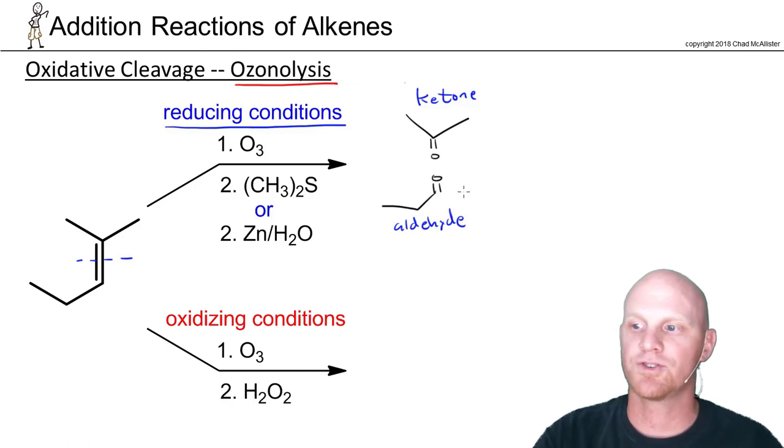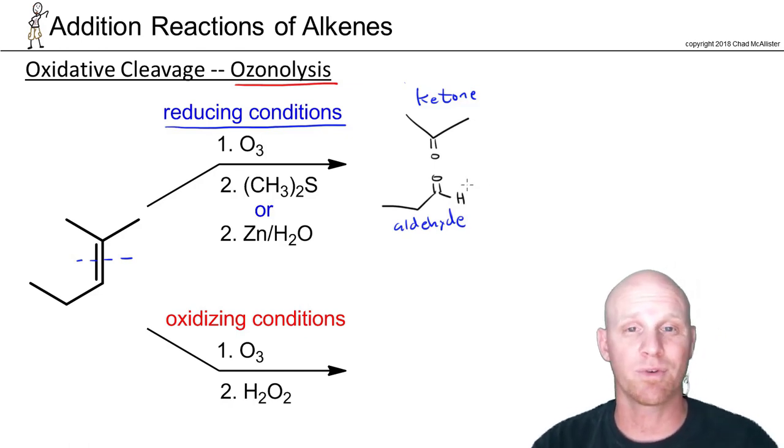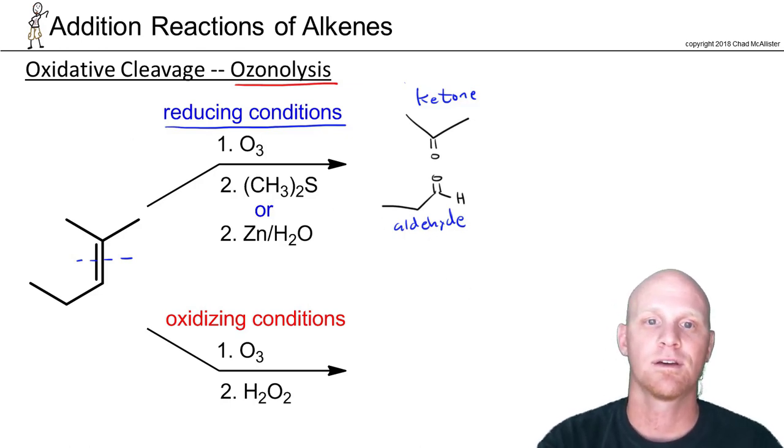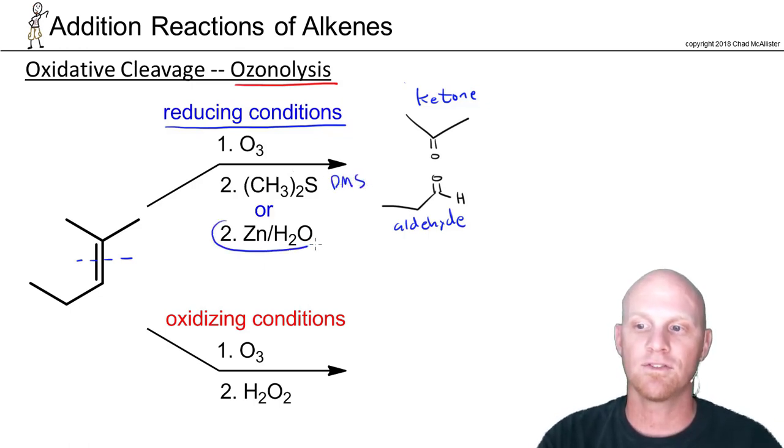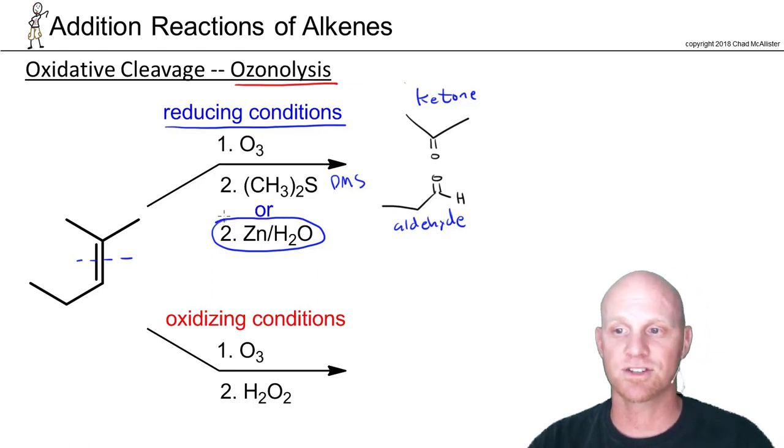And then we've got an aldehyde on bottom. And for that aldehyde, we will often draw in the hydrogen. We don't normally draw in carbon-hydrogen bonds. But for an aldehyde, it's actually proper to draw that hydrogen in. But these would be your two products. And as we said on the last slide here, in that second step, this is dimethyl sulfide, often abbreviated DMS. Your other option is you could also add zinc and water as a reducing agent, as well.